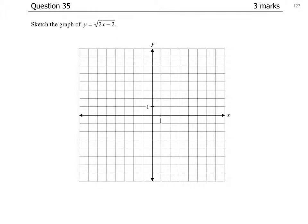This is a radical graph, and we could do this in two ways. We could graph the parent function 2x minus 2 and then apply the square root to our y values, or we could do this as a transformation of the square root of x.